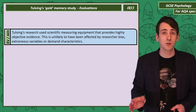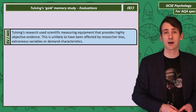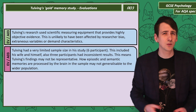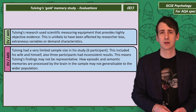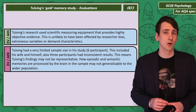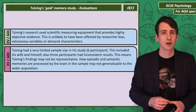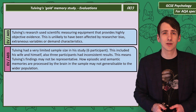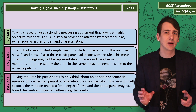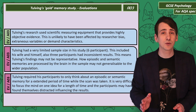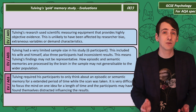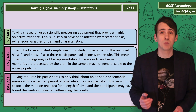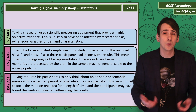These results are unlikely to be affected by researcher bias, extraneous variables, or demand characteristics. However, we may question the sample used — only six participants is a small sample, and it included Tulving and his wife. Also, only three of those participants showed consistent results, so the results might not be representative; those three people could have been unusual in how they processed long-term memories. We can also question the validity of the task, as it's very difficult to focus the mind on just one thought for any length of time, and participants may have become distracted, influencing the results.